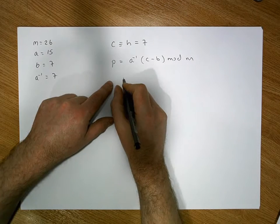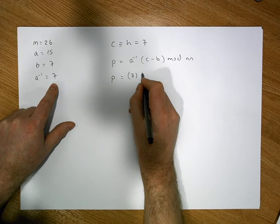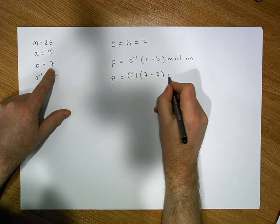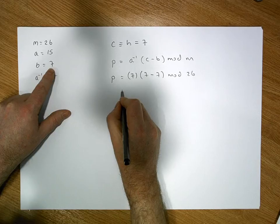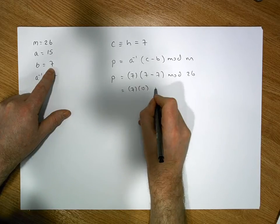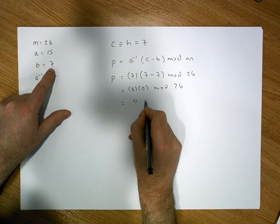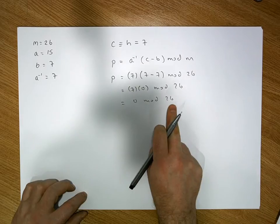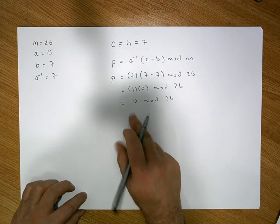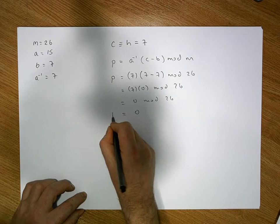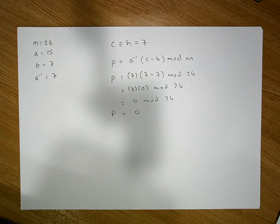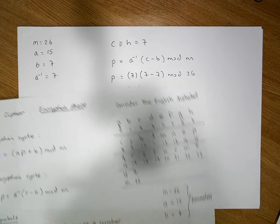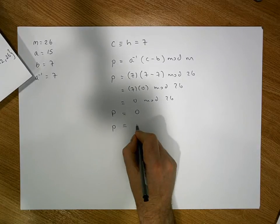The plaintext must be equal to a inverse, which is 7, times the ciphertext, which is 7, minus the b value, which is 7, modulo 26. That gives us 7 times 0, modulo 26, which is 0 modulo 26. When I divide 26 into 0, the remainder is 0, so p must be equal to 0. Looking this up on our encoding, 0 is A — so the plaintext is equal to A.